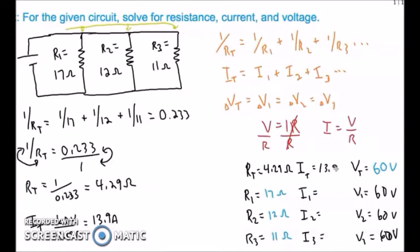I1 is equals to V1 upon R1. In parallel circuit we know that voltage remains same, so VT = V1 = V2 = V3 = 60 volts. So 60 divided by 17 makes it 3.5 amperes. I2 will be 60 divided by 12, which is 5 amperes.